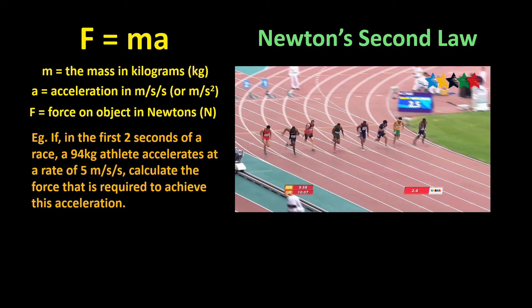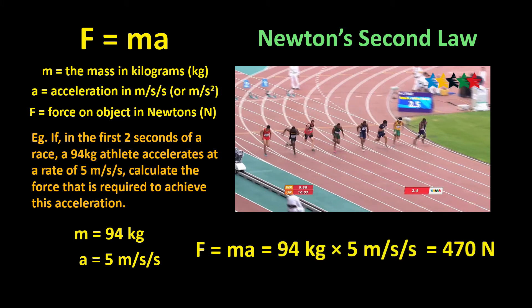If in the first two seconds of a race, a 94-kilogram athlete accelerates at a rate of 5 meters per second per second, calculate the force that is required to achieve this acceleration. Well, M equals 94 kilograms, A equals 5 meters per second per second, and so the force F equals MA, which equals 94 kilograms times 5 meters per second per second, which equals 470 Newtons.